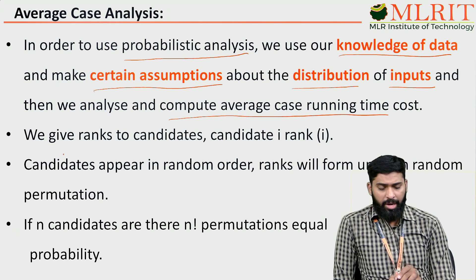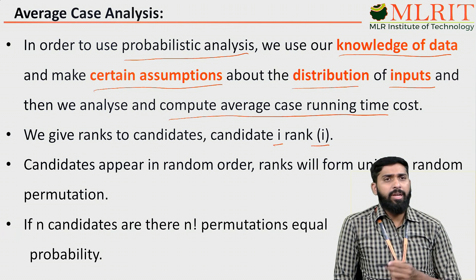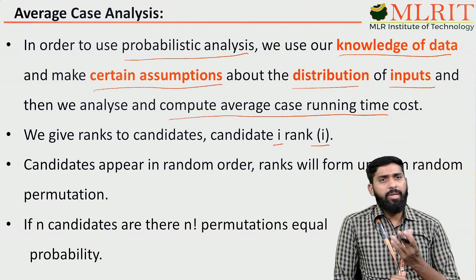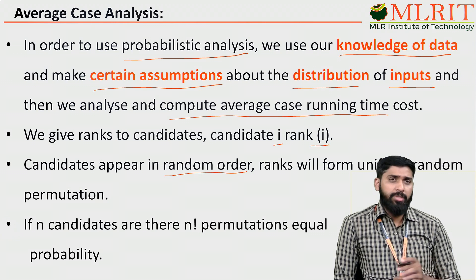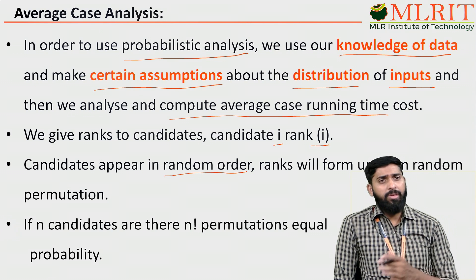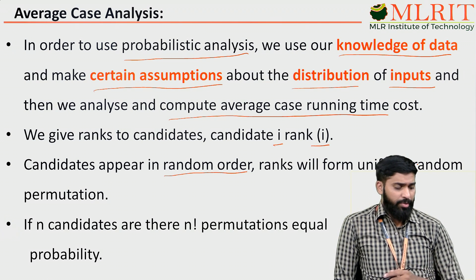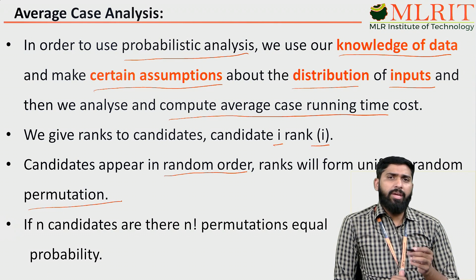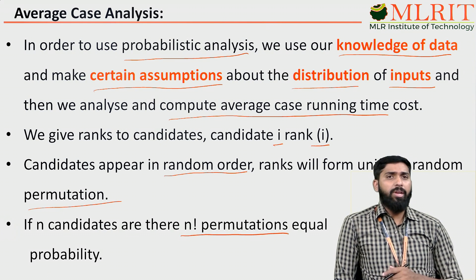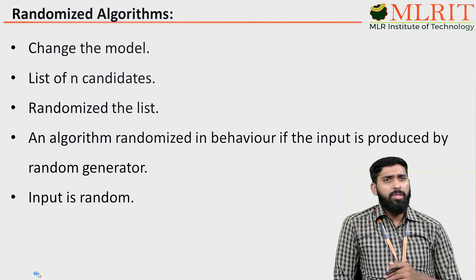Here we give ranks to candidates — candidate i gets rank i. Candidates appear in random order, and ranks will form uniform random permutations. That means if there are N candidates, there are N! permutations each with equal probability. We use a randomized algorithm to minimize the time complexity of the problem. We change the model: given a list of N candidates, we randomize the list. The algorithm behaves randomly if the input is produced by a random generator.